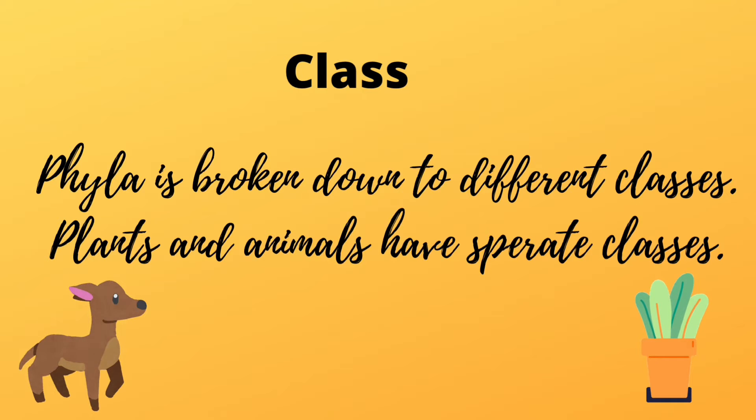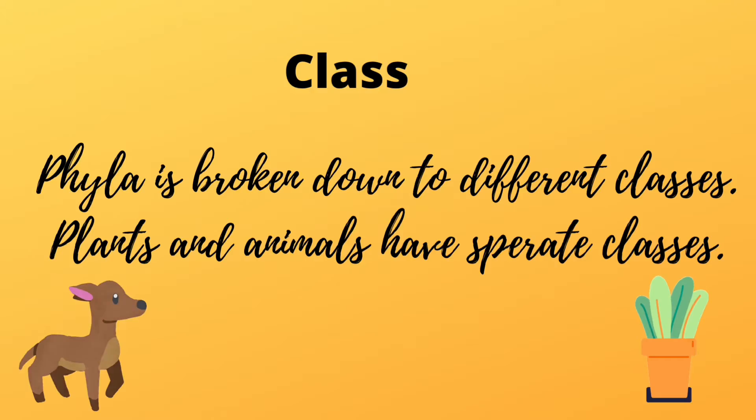Class. Phyla are broken down into different classes. Plants and animals have separate classes. So to review: kingdoms get divided into phyla or divisions, and then phyla or divisions get divided into class.